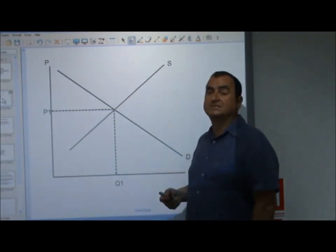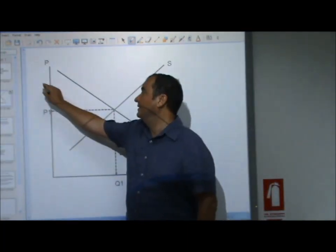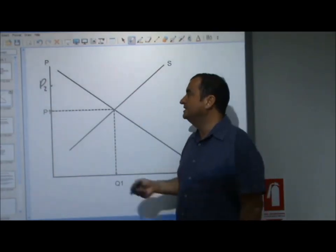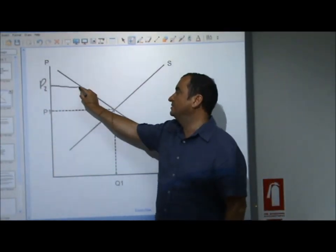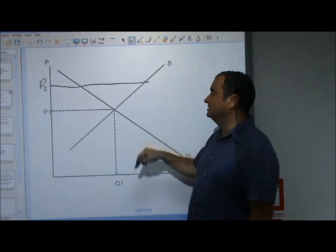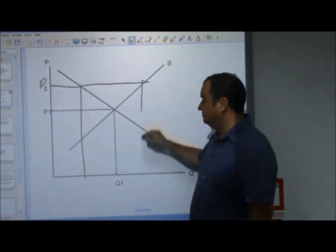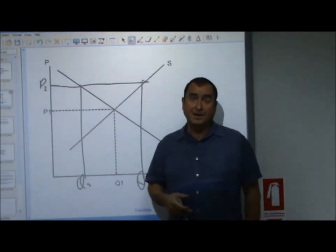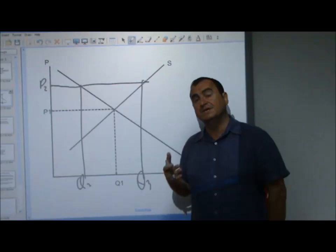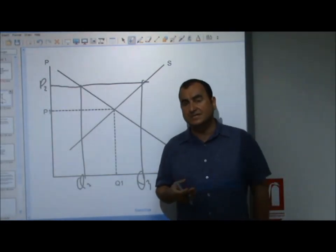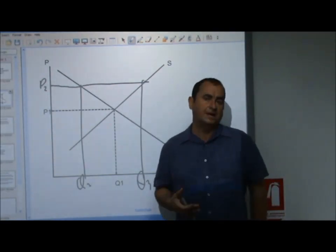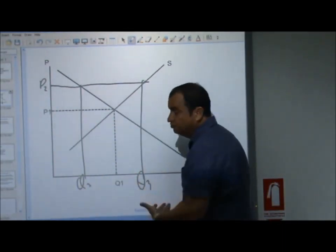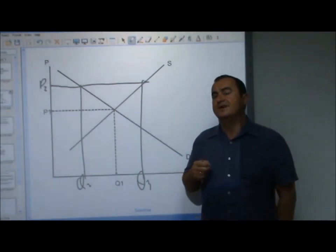Imagine that the price was at P2, up here. If the price were at P2, you can see at price P2, there is this much quantity demanded and this much quantity supplied. There is a huge gap between the quantity demanded and the quantity supplied. At price P2, far more is being supplied than is being demanded. And this will lead to excess supply in the market.